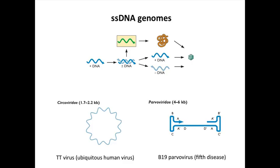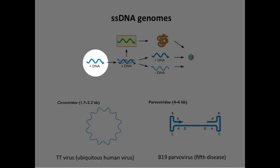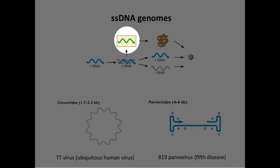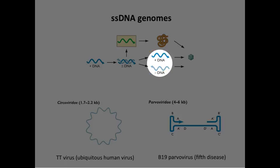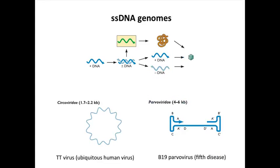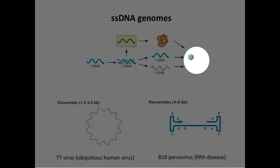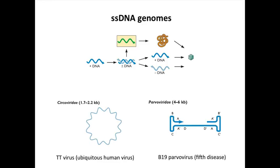Single-stranded DNA genomes: single strands can't be copied into mRNA — remember, only double-stranded DNA can be transcribed into mRNA. So a virus with a single-stranded DNA genome, whether packaging the plus or minus strand, has to be converted to double-stranded DNA, which is then transcribed by the host RNA polymerase to make proteins. The genome replicates and makes single strands as it replicates. These viruses tend to package a mixture of both strands — not exclusively plus or minus — and we don't know why.